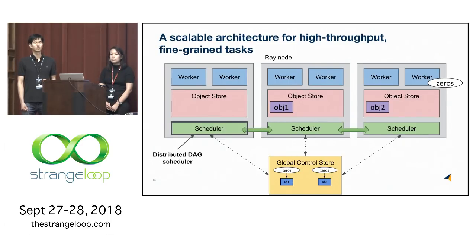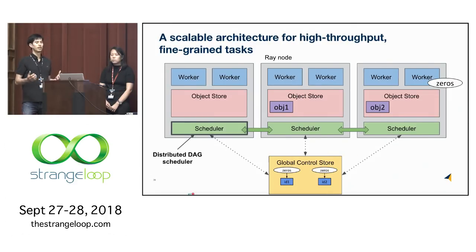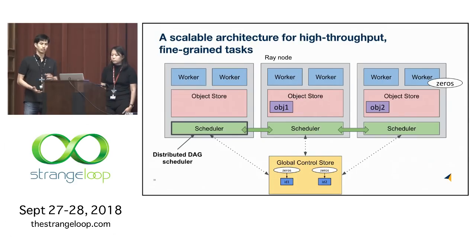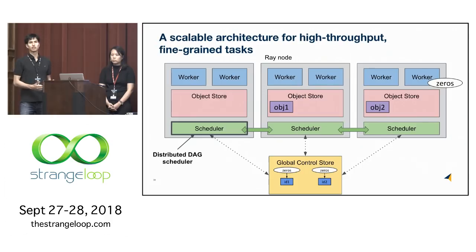The shared memory is within a single machine, as opposed to distributed shared memory. This was originally developed as part of Ray and has since been contributed to the Apache Arrow project because it's useful as a standalone capability independent of Ray.